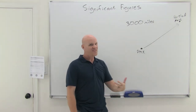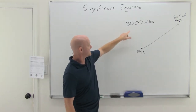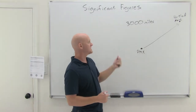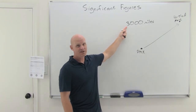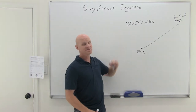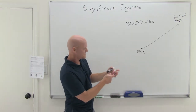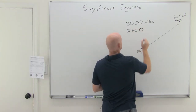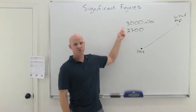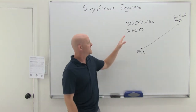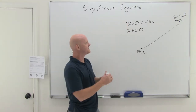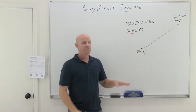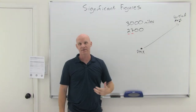With significant figures, we often look at zeros as not being significant in cases like this. So this would have one significant figure in the thousands place and be precise to plus or minus 1,000. But what if I said it's like 2,700 miles? This makes a big difference — in a lot of vehicles, this would be the difference between a full tank of gas getting there or not. All of a sudden I've got a more precise number with significant figures in both the thousands and the hundreds place. Now this number is considered precise to plus or minus 100.